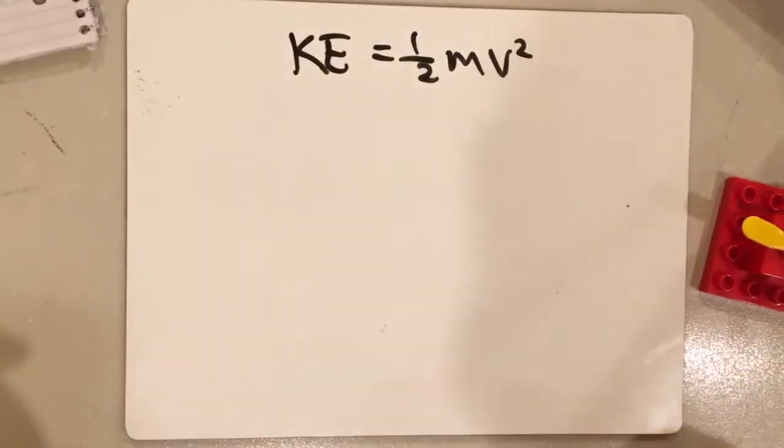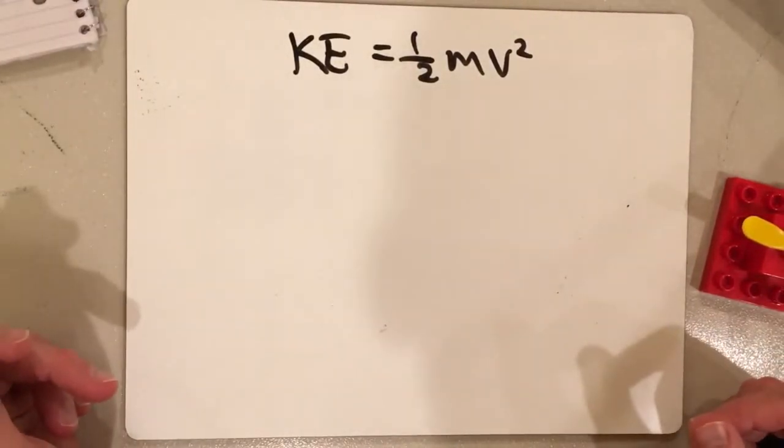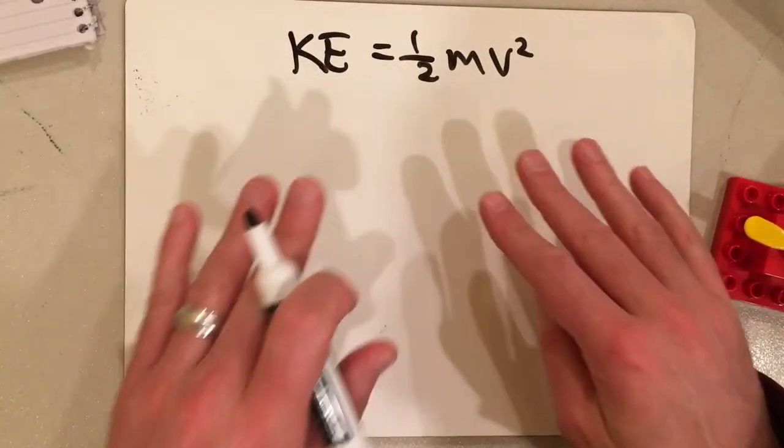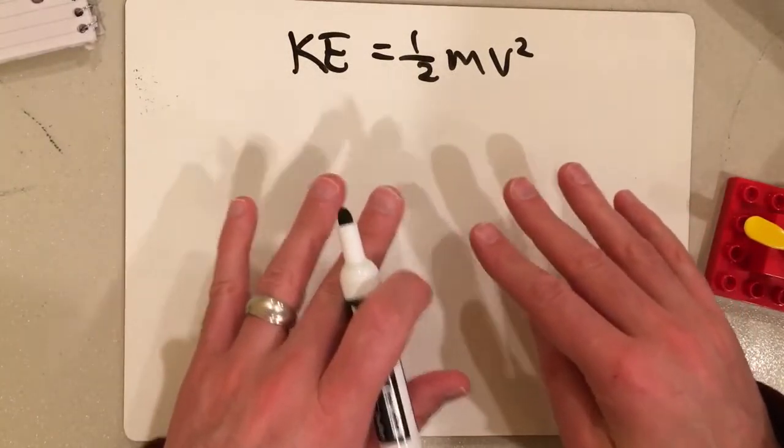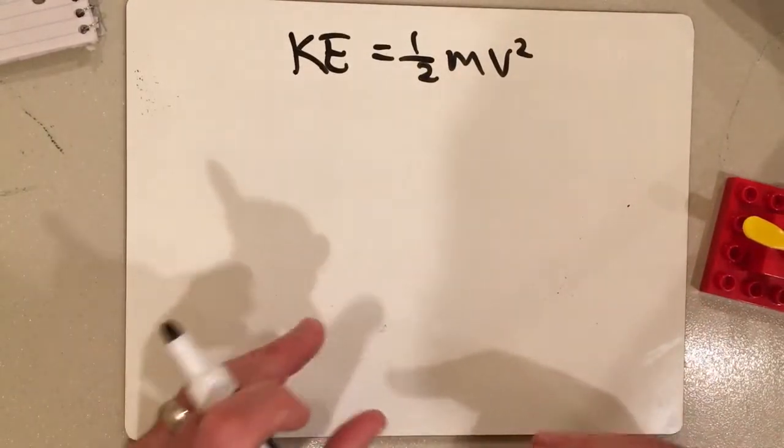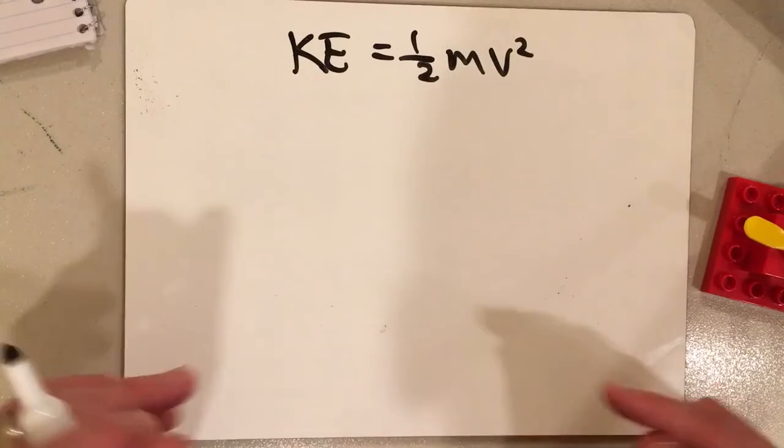We have talked about kinetic energy being the energy due to motion. And we've used this formula, and strictly speaking, this formula is derived for a particle. So if the particle's position is changing, then it has kinetic energy.